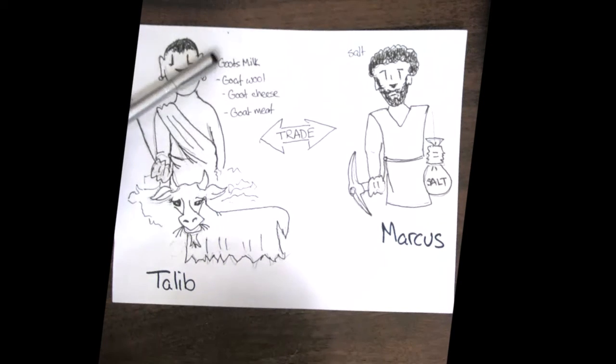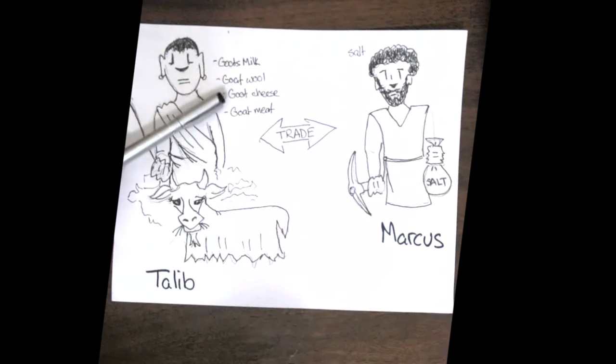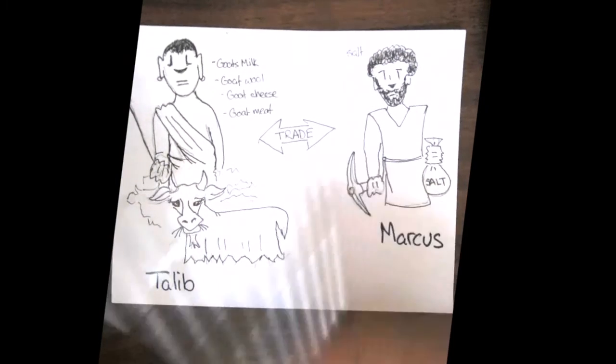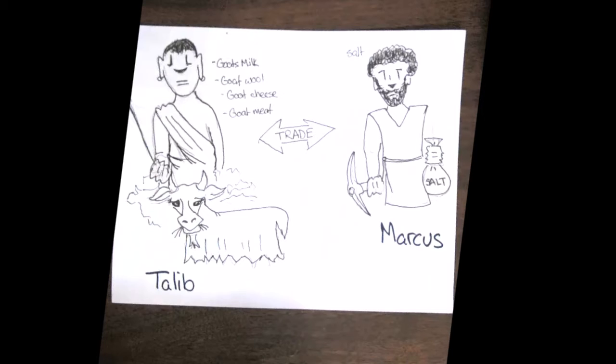And this is Marcus. Marcus is a miner who mines for salt. Plenty of salt. Tlaib's got way more stuff. Marcus's stuff is way more valuable. Tlaib's food is pretty bland. Marcus doesn't have any food, just salt. So they trade.